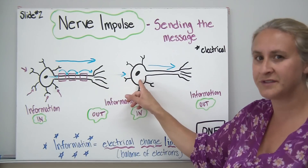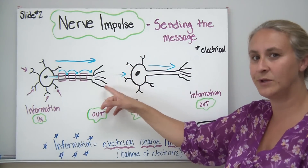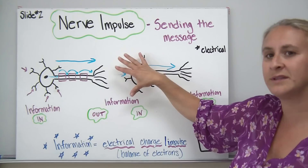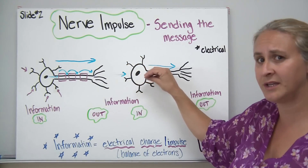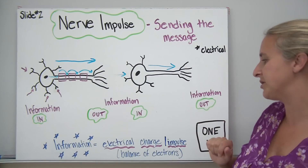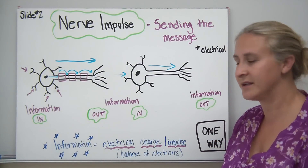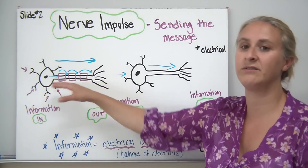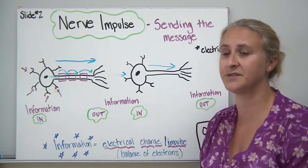With another nerve cell right next to it, we'll later show how information gets communicated from one cell to the next. The cell body with dendrites takes information in and sends it down the axon to the opposite end, where it comes out. That information travels as an electrical charge — a balance of electrons — and can only travel in one direction; it cannot go the opposite way down the nerve cell.